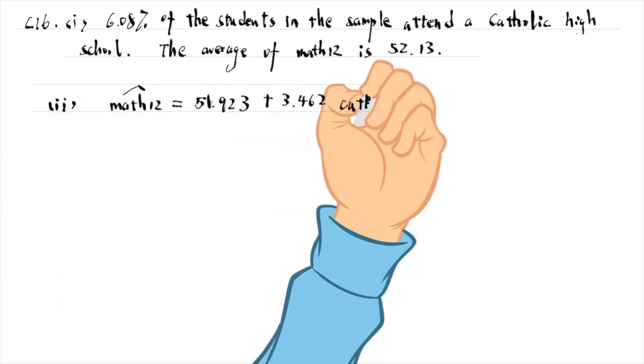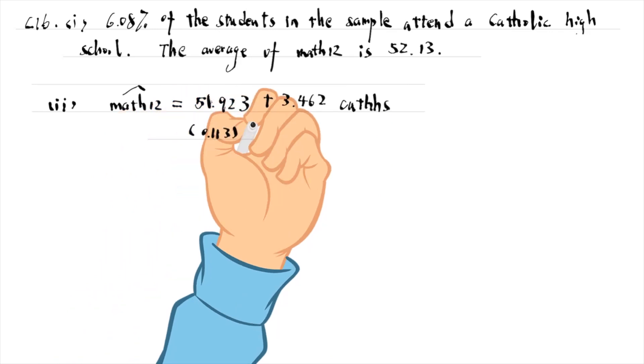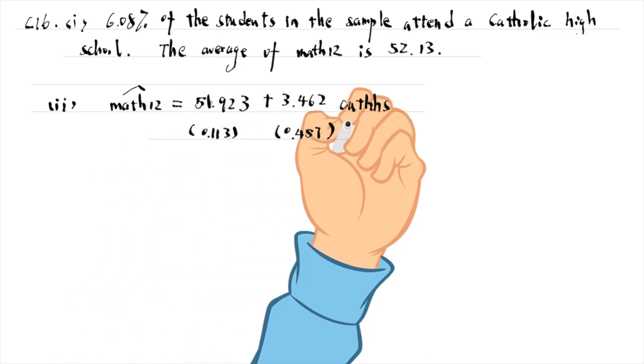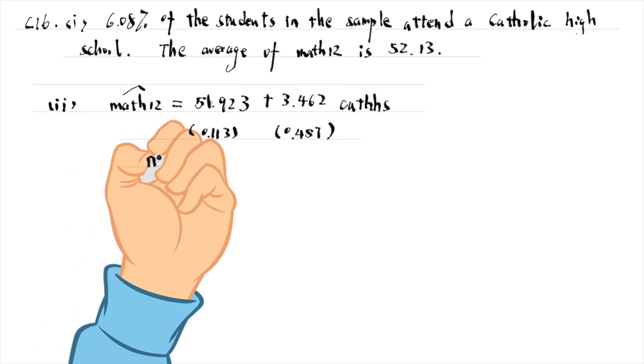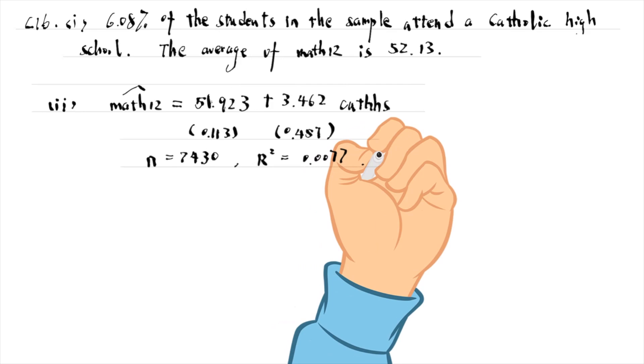We run a simple regression in part 2. The estimated equation is as follows.